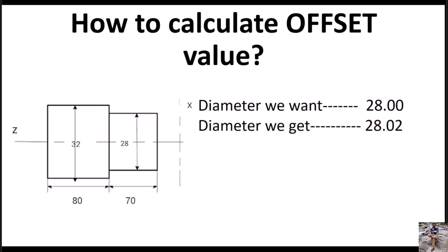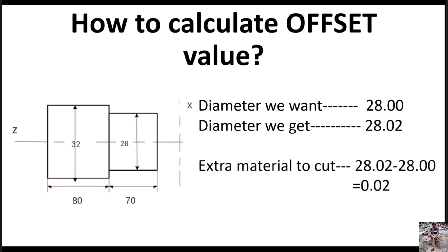This is our workpiece and the size we want after machining is 28mm. However, due to insert wear we're getting 28.02mm. That means there is some excess material present. To calculate that excess material we have to subtract the size we want from the size we get — that means 28.02 minus 28 — so we get 0.02mm excess material. This is the offset value we will give in X, as this is the extra material in the diameter.